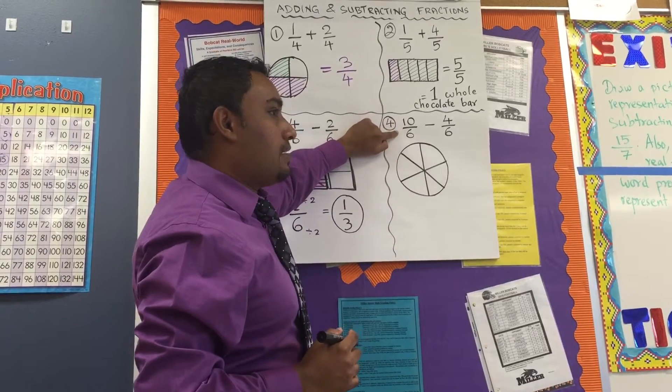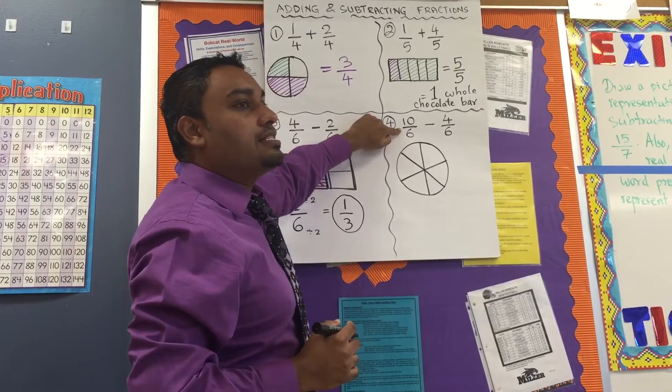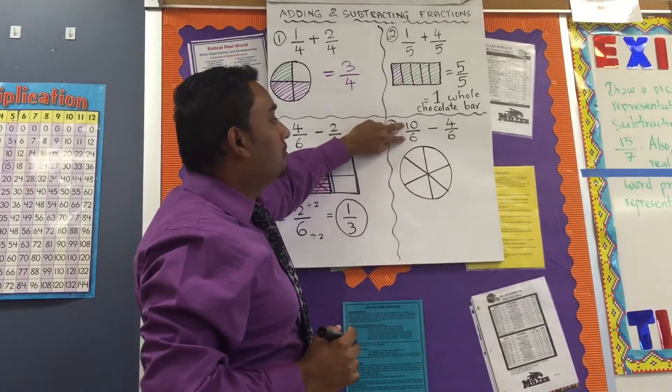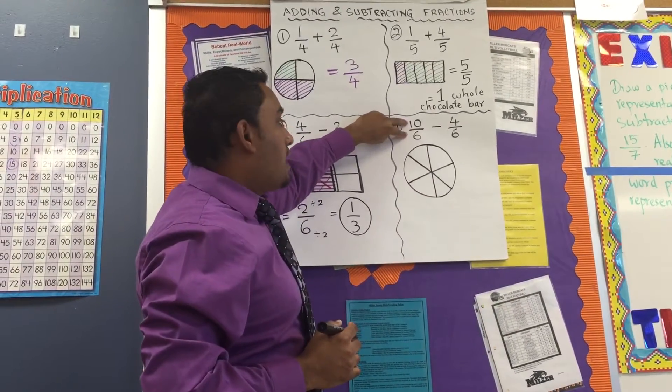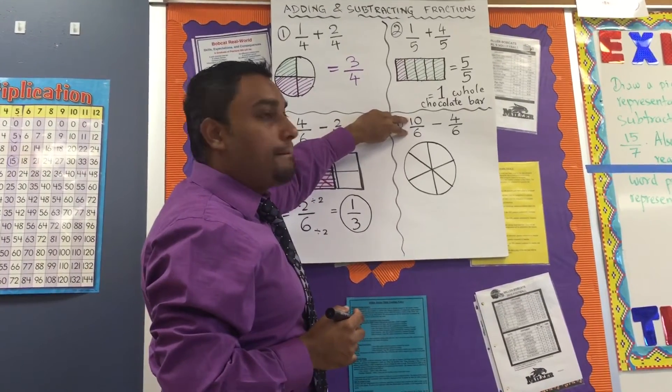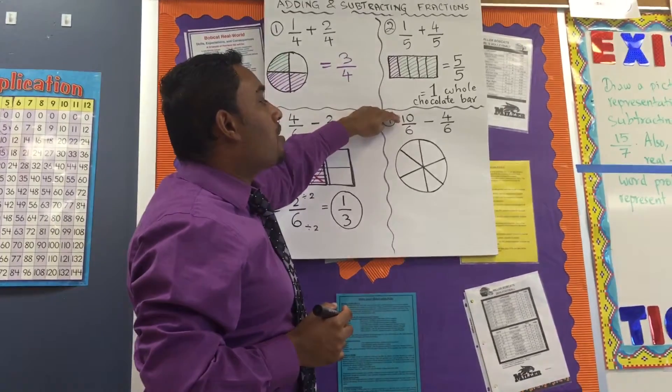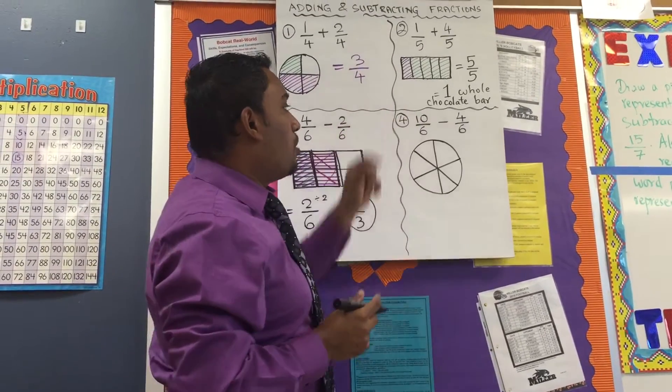It says 10-6. What kind of fraction is 10-6, Serena? Improper. That's an improper fraction because, Josh? The numerator is bigger than the denominator. Yes, exactly. The numerator is bigger than the denominator.